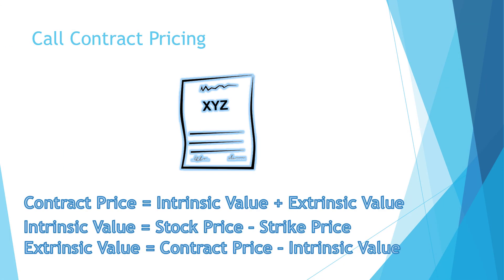Let's quickly review the equations covered in this presentation. Contract price = intrinsic value + extrinsic value. Intrinsic value = current stock price − strike price, noting that only in-the-money strikes have intrinsic value. Extrinsic value = contract price − intrinsic value, which is simply rearranged from the first equation.